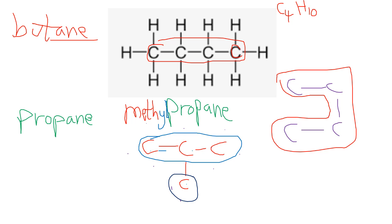Now we need to number the carbons in the main chain starting at one. Wherever the methyl group is located, you put that number in front of 'methyl', separated by a hyphen. In this case the methyl is on carbon two, so this is called 2-methylpropane. Whichever end you start from, the methyl is still on carbon two.